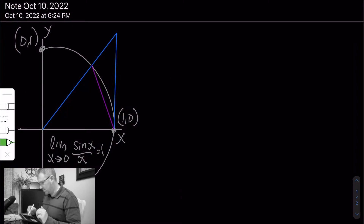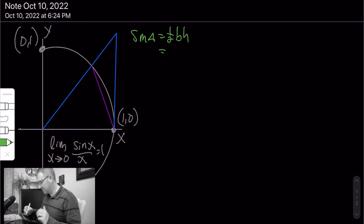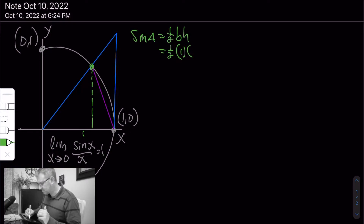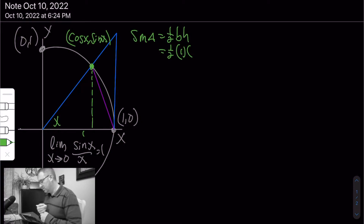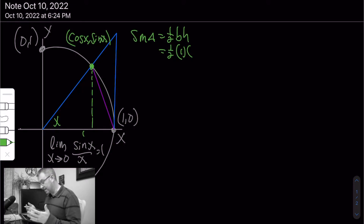The first triangle is this small triangle right in here. The area of the small triangle is the common formula: one half base times height. The base is one since this is a unit circle. The coordinates of the point on the circle are cosine x and sine x, where x is our central angle, so the height is simply sine x. That gives us an area of sine x over 2.